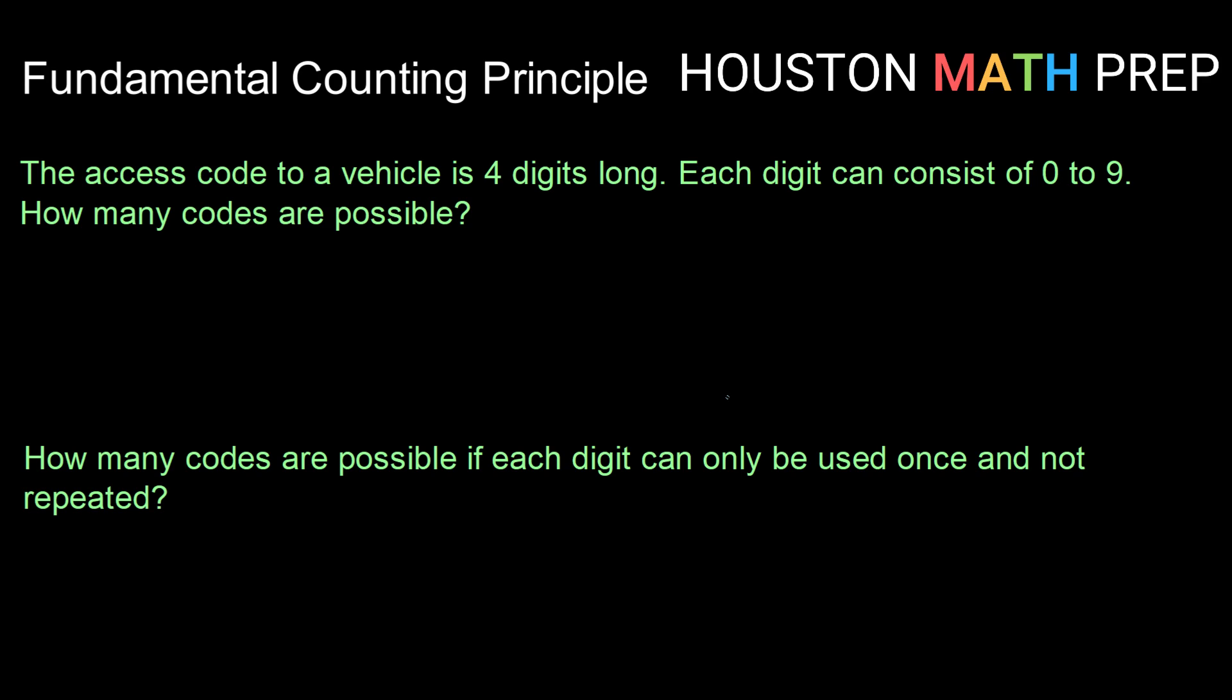So let's say we have an access code to a vehicle and it is four digits long. So a code like 1, 2, 3, 4 that you can punch into a panel to get into a vehicle without a key. Let's say each digit can consist of the numbers 0 to 9. How many codes are possible?